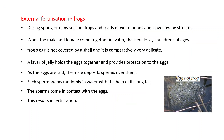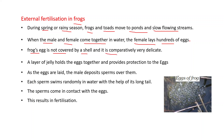Now let's look at external fertilization in frogs. During spring or rainy season, frogs and toads move to ponds and slow-flowing streams. When the male and female come together in water, the female lays hundreds of eggs. Frog eggs are not covered by a hard shell; they are comparatively very delicate.